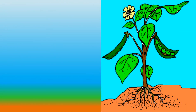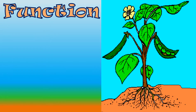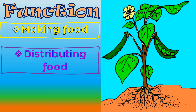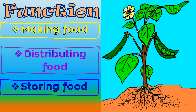Different parts of the plant have their own functions. They help in making food, distributing food, and storing food.